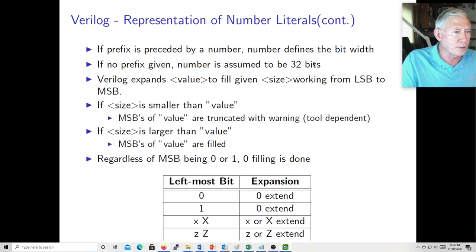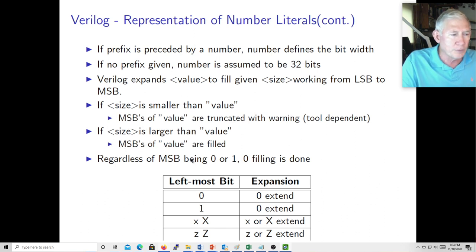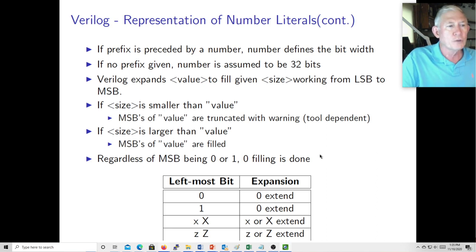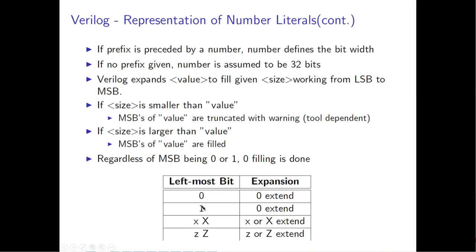If you don't specify the number of bits, it's assumed to be 32. Verilog expands the value to fit the size, working from least significant bit to most significant bit. If the size is smaller than the value, it will truncate without giving a warning. If the size is larger, the most significant bits of the value are filled — zero filling is done unless you're using two's complement, meaning unless you specify signed. However, if that most significant bit is X or Z, it's going to be X or Z extended.